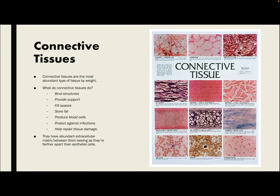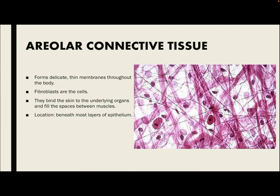Connective tissues are the most abundant type of tissue. They do different things like bind structures, provide support, store fat, and protect against infections, among many other things. They have an abundant extracellular matrix between them because they are farther apart compared to epithelial cells.